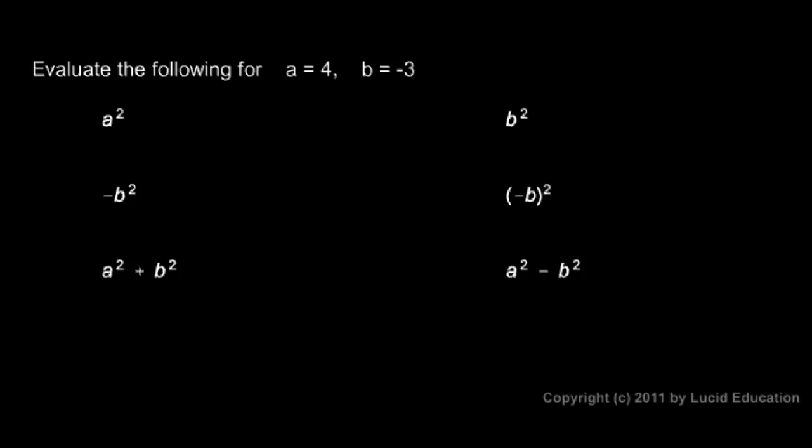In each case here, we're told that a is 4 and b is negative 3. We'll see how this negative number, or in a lot of cases a negative sign in the problem, shows up along with a number being squared when one of the numbers might be negative.